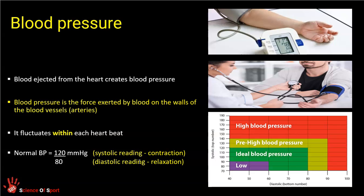Blood pressure is a term you've probably encountered — you may have had your blood pressure measured using a sphygmomanometer or a cuff at the doctor's. You know that high blood pressure is bad and overly low blood pressure is not great. When the heart ventricles contract and eject blood, that blood is at relatively high force and high velocity — it's been pumped out of the ventricles and sent into the aorta, the main artery, at great pace. Arterial blood therefore has relatively high blood pressure.